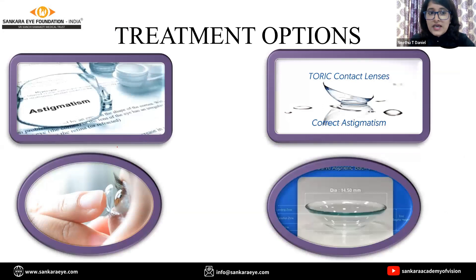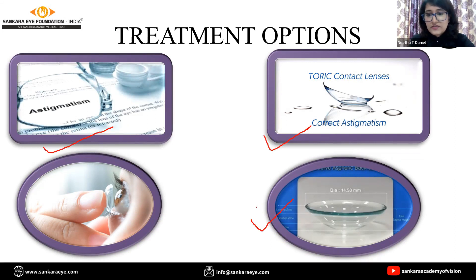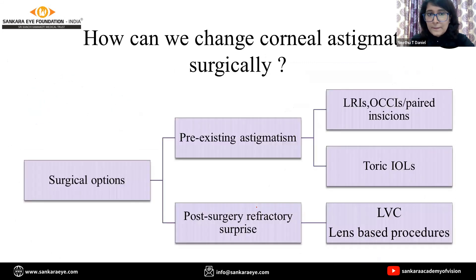The treatment options we have include giving cylindrical lenses in the form of spectacles. For a significant amount of astigmatism, we can give toric soft contact lenses. And we have RGP lenses and scleral lenses, which work best for irregular areas of the cornea.